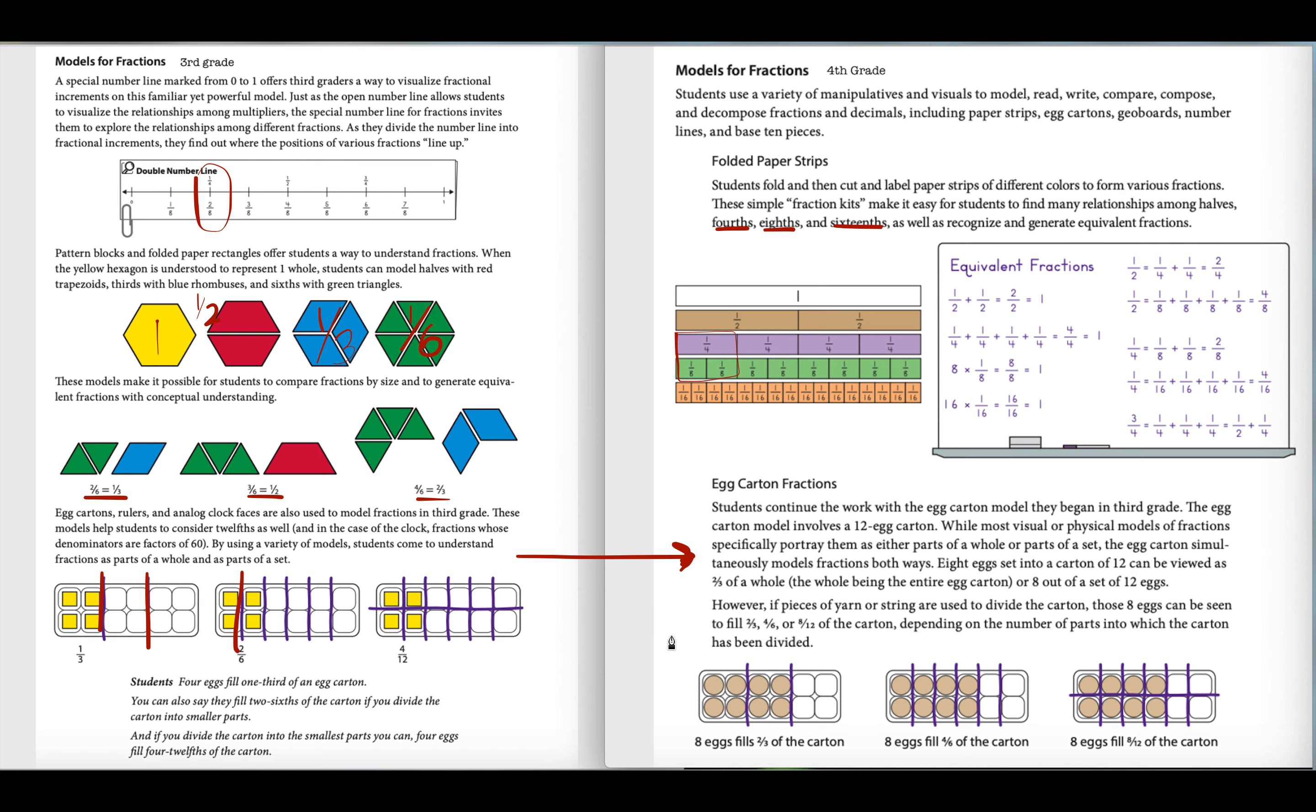And so in fourth grade, we start to think about how much is filled. And so we can start to think about when we're looking at the egg cartons. For example, here, eight eggs set into a carton of twelve can be viewed as two-thirds of a whole, or two-thirds of the carton.